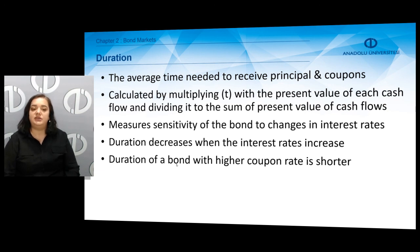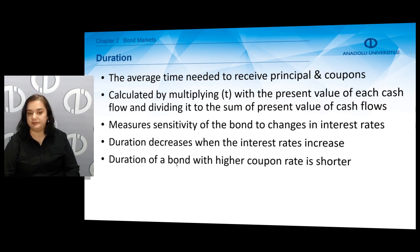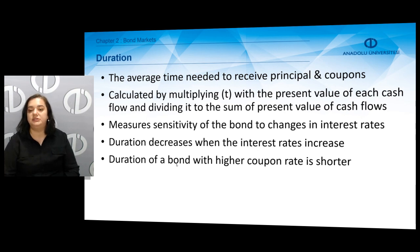Duration decreases when interest rates increase. The duration of a bond with a higher coupon rate is shorter compared to bonds with lower coupon rates. So the greater the coupon rate, the shorter the duration; and the greater the interest rates, the shorter the duration.